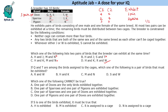The next question: if Q and T are among the birds assigned to cages, which one of the following is a pair of birds that must be exhibited? Q and T are assigned to cages, and we already know one dove pair must be exhibited. The female dove among them is W. We're given that if J or W is exhibited, S cannot be exhibited — so S cannot go with W. Therefore the pair must be R and W, which is the mandatory exhibited pair.